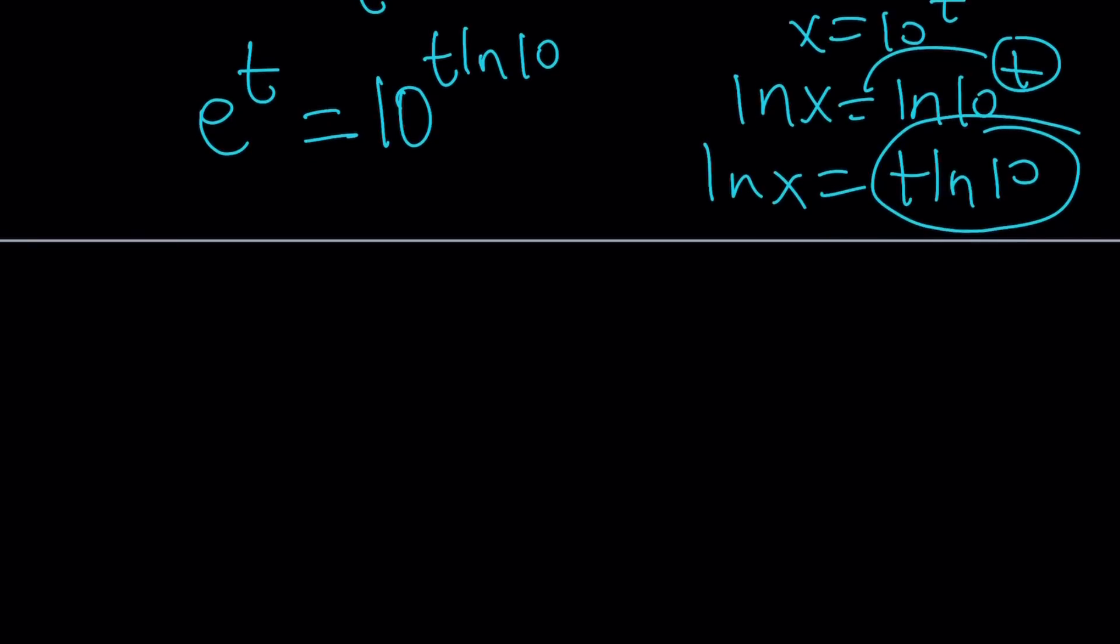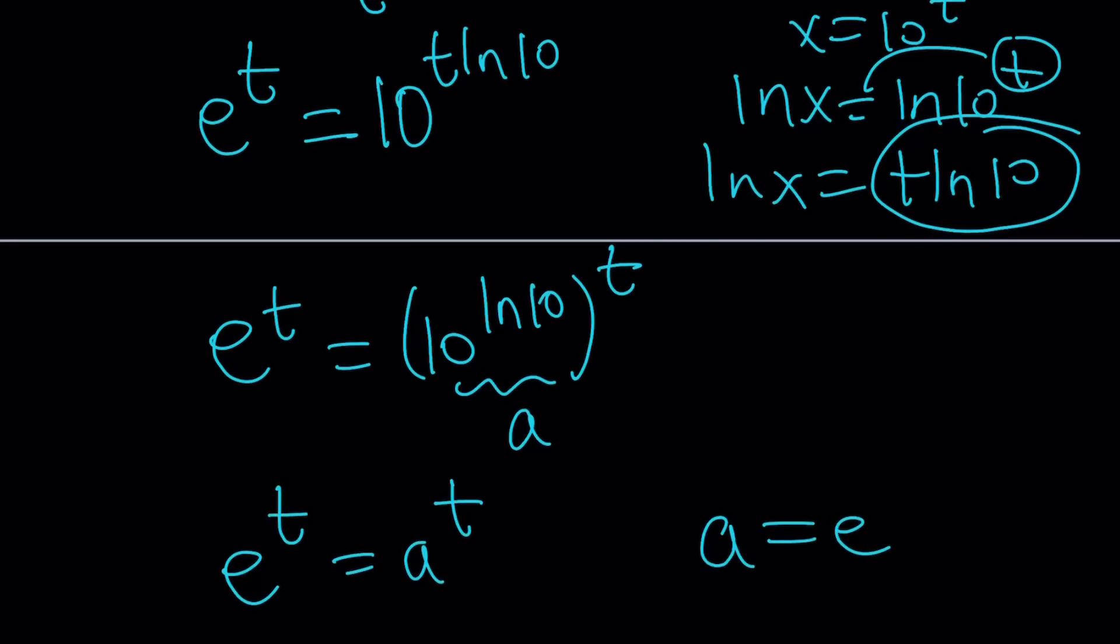Now, we've got the same exponent. Yay! Awesome! Beautiful! And you can do the following. I can write this as e to the t and this one as 10 to the power ln 10 to the power t. Let's call this number a. So, we have e to the t equals a to the t.